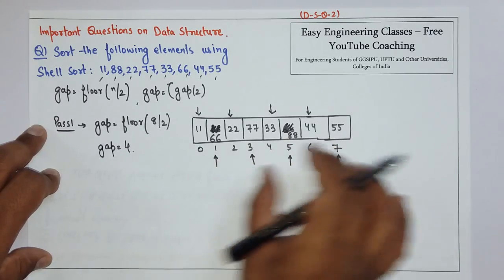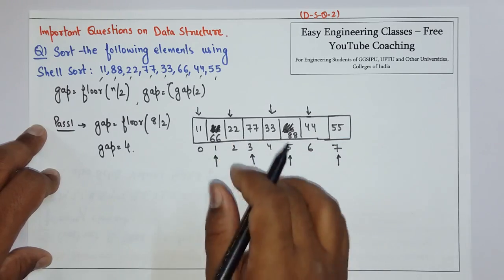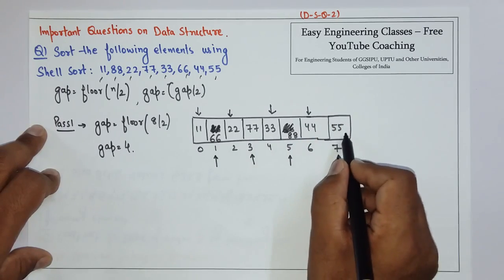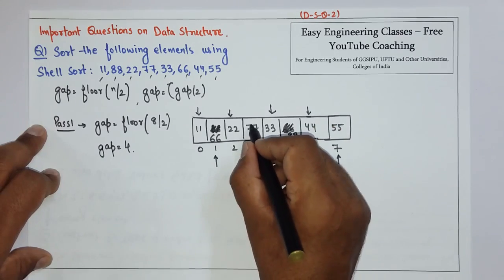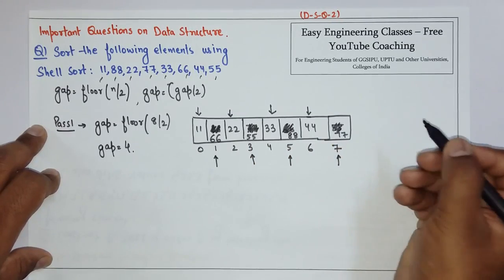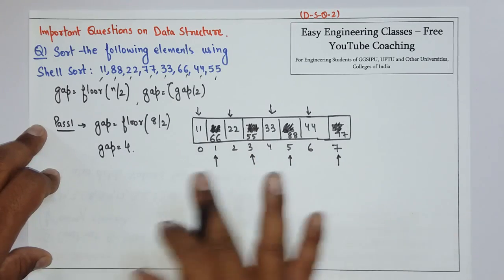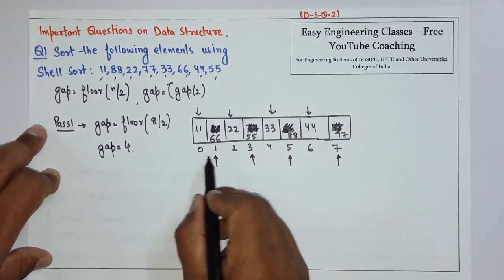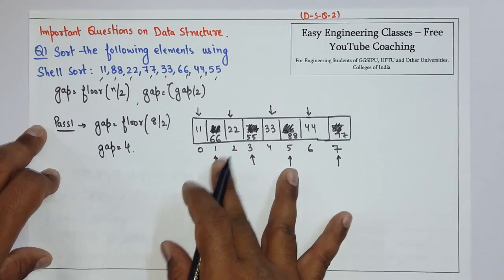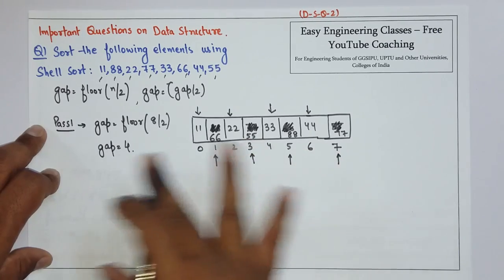Proceed and check element at 2 and element at 6 — this is smaller so we don't have to do anything. Element at 3 and element at 7: since 7 is smaller than the third element, swap them, so it will now be 55 and 77. Once done, do one more pass: element at 0 and 4 no swapping, 1 and 5 no swapping, 2 and 6 no swapping, 3 and 7 no swapping. Pass 1 is complete.